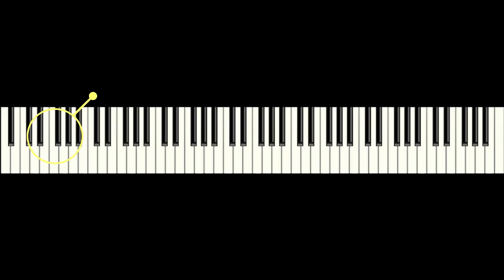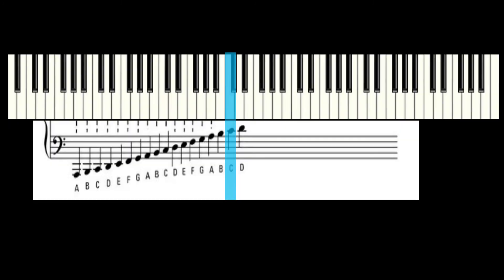Notes on the keyboard go from low notes to the left up to the high notes on the right. Here is how they sound with the notes written on the stave — the letter of the note is shown underneath and also their place on the keyboard.